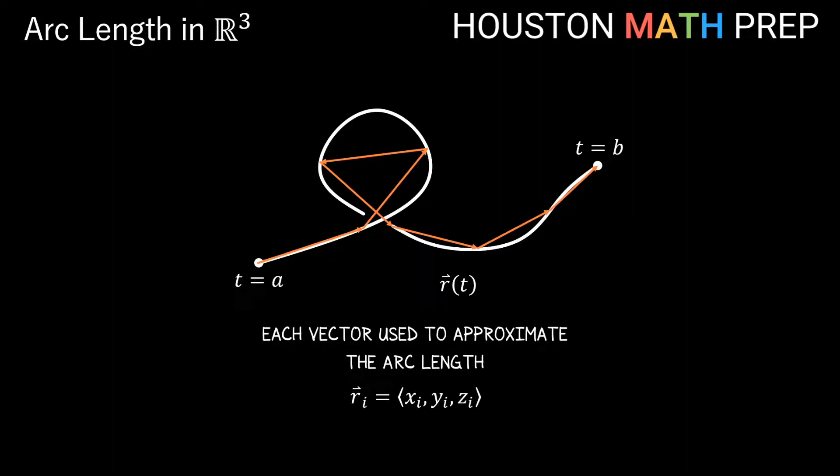But going with this, each vector would have its own x, y, and z components, and we'd figure out the length of each of these vectors, and then we would add up the lengths of however many vectors that we use to approximate, and that would give us our estimate of the length. Here we've labeled the arc length s in this case.